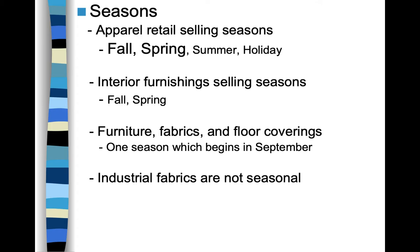Interior furnishings sell in two seasons: fall and spring. While you might buy decorative Halloween or Christmas pillows, big purchases like couches, drapes, upholstery fabrics, and rugs are kept for a long time. You might buy flannel sheets for fall and winter, then switch to 100% cotton in spring and summer. So interiors has two selling seasons — fall and spring — skipping holiday and winter. Furniture fabric and floor coverings have just one season, typically September.